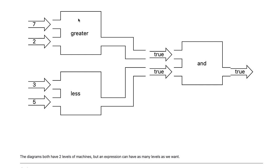As we can see, the machine greater takes 7 and 2 as inputs and outputs true. And the less machine takes 3 and 5 as inputs and also outputs true. Finally, the and machine takes true and true as inputs and outputs true.